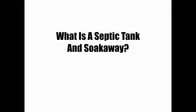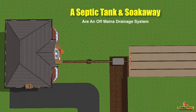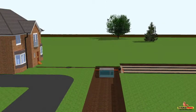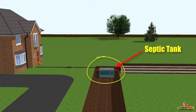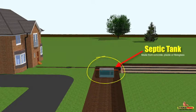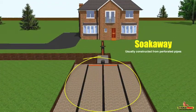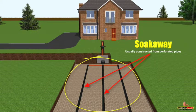So what is a septic tank and soak away? A septic tank and soak away are for properties not connected to mains drainage. A septic tank can be made from concrete, plastic, or fibreglass. Soak aways are generally constructed from perforated pipe, gravel, or soak away crates.